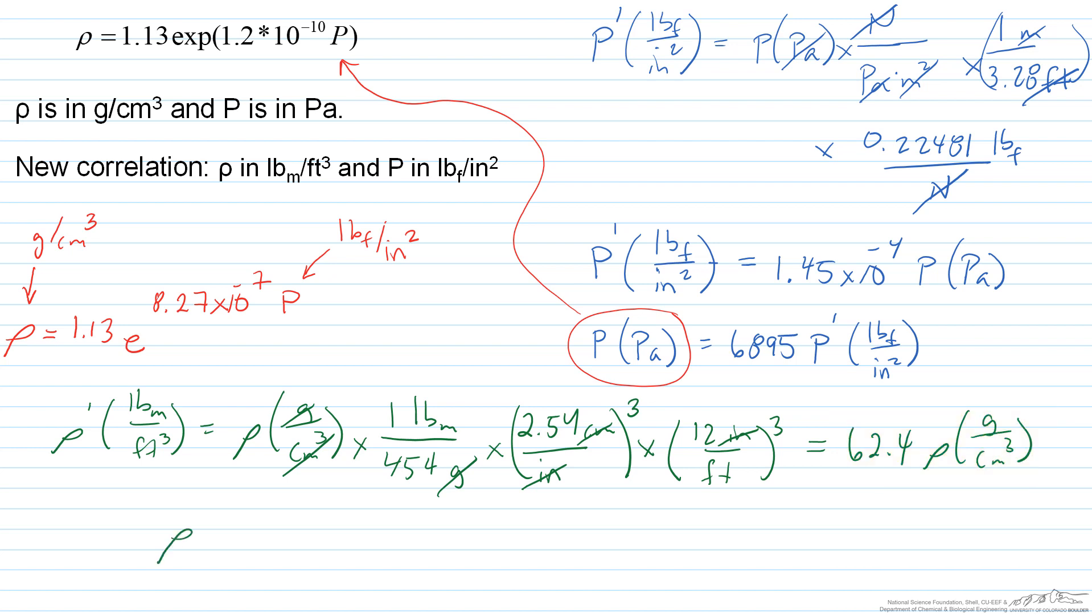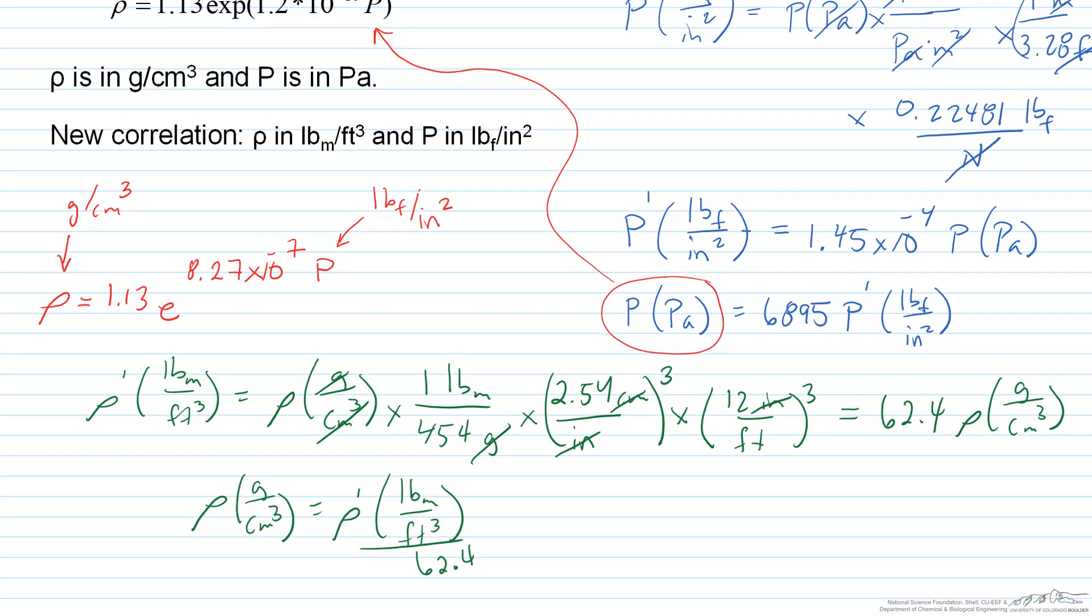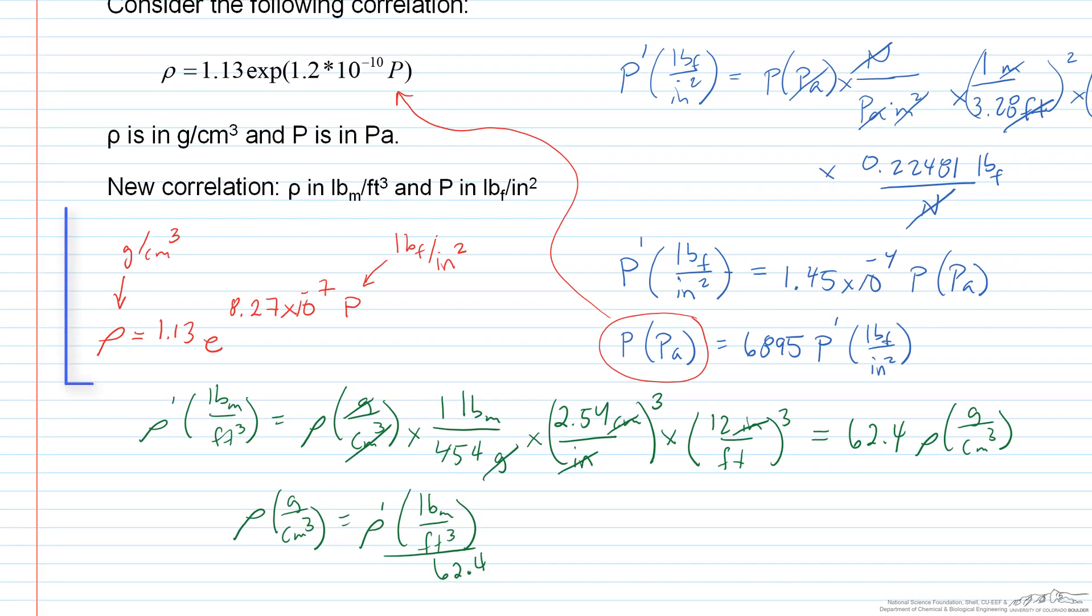I can rewrite that as rho in grams per centimeter cubed is equal to rho prime, that's in pound mass per cubic foot, times, or I guess divided by 62.4. So it's just a factor of 62.4 separating those two. Now recall this red expression here. We had density in grams per cubic centimeter. So I'm going to take this, and I'm going to plug it in there. I'm going to then multiply the 62.4 over.